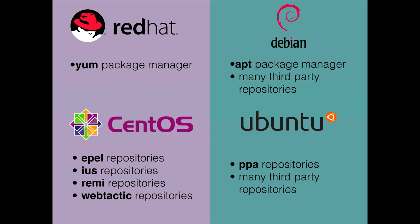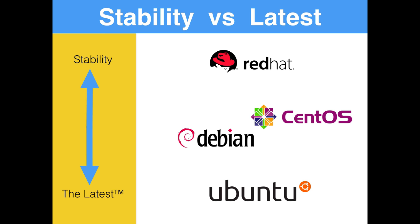Stability versus the latest software is really the tension you see in Linux flavors. At the top we have Red Hat, which is the most stable but the last to get newer versions of software. In the middle we have CentOS and Debian — CentOS is a little more conservative and stable, and harder to get the latest software, largely because companies using it often have policies against adding extra repositories since they might not be trusted. Debian is typically used by people who want a little more stability than Ubuntu.